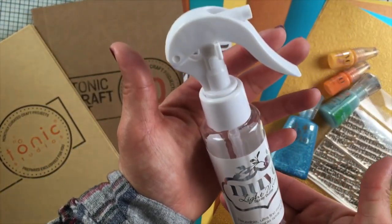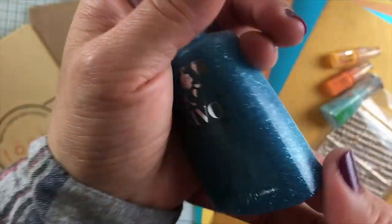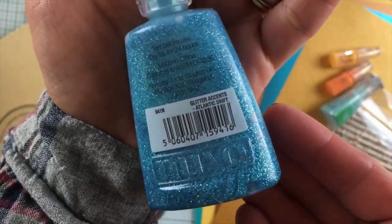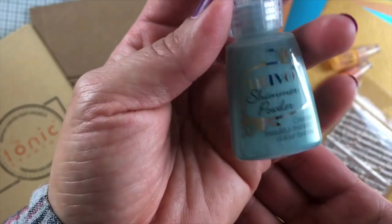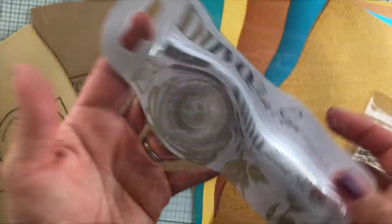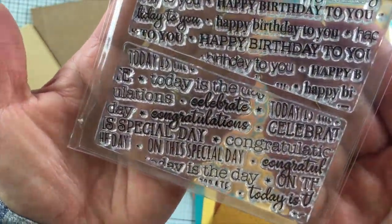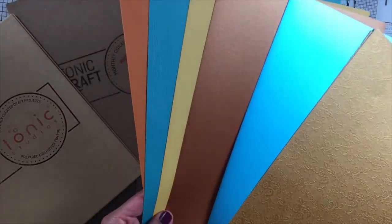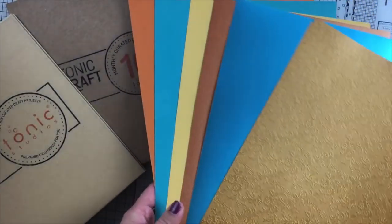You are going to get a spray bottle, this bottle with Nuvo glitter accents, shimmer powder, Nuvo crystal drops, a glue pen, two mini background stamps, Craft Perfect cardstock with different textures and colors.